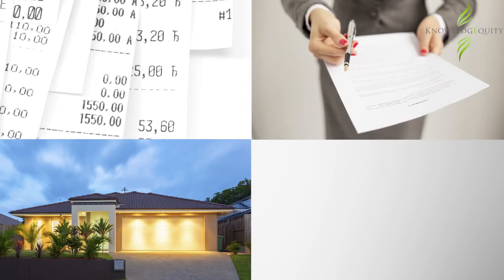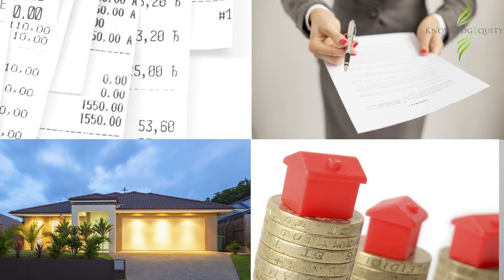Furthermore, only certain fringe benefit types can apply the otherwise deductible rule, including expense payments, loans, property, board, and residual fringe benefits. To recap, the otherwise deductible rule applies to reduce the fringe benefit's taxable value of certain benefits provided to an employee by the amount that would have been otherwise deductible by that employee.